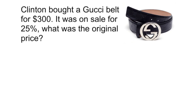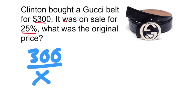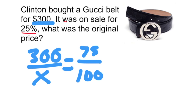You need to read these percent situations very carefully because they're not all the same. This one says Clinton bought a Gucci belt for $300 — they're telling you what he paid. It was on sale for 25% off. What was the original price? Since he paid $300 and 25% was taken off, the $300 represents 75% of the original amount. We can set up a proportion: 300 over X equals 75 over 100.